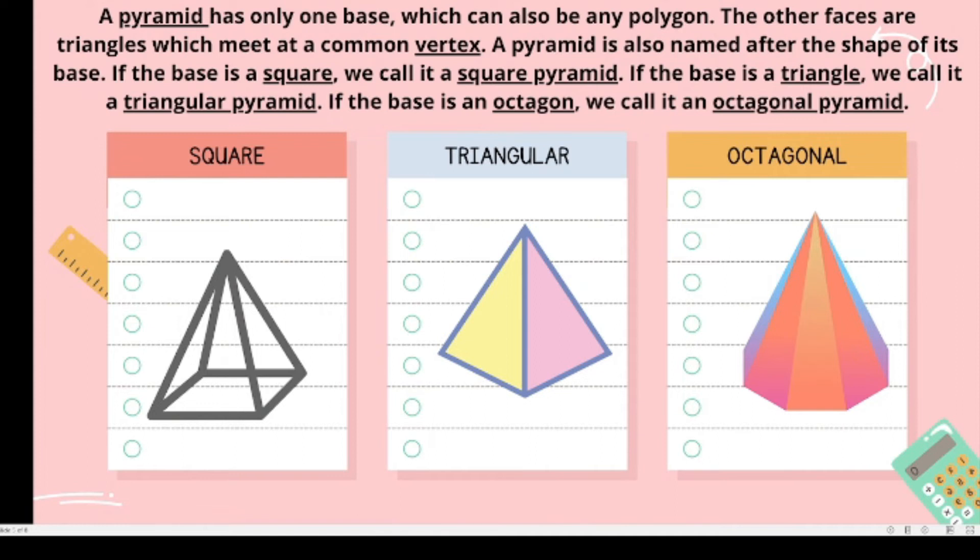A pyramid has only one base which can also be any polygon. The other faces are triangles which meet at a common vertex. A pyramid is also named after the shape of its base. If the base is square, we call it square pyramid. If the base is a triangle, we call it triangular pyramid. If the base is an octagon, we call it an octagonal pyramid.